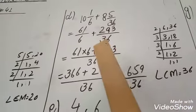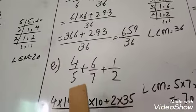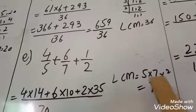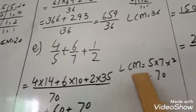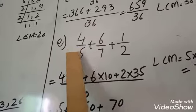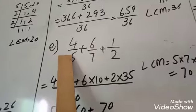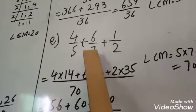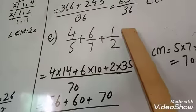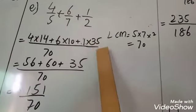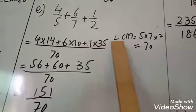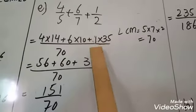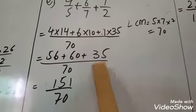Next question: we first change into improper fraction, then take LCM and solve. Here are three fractions. These three denominator values are prime numbers, so we simply multiply them: 5 times 7 is 35, 35 times 2 is 70. So we write 70 in the denominator. First value denominator is 5, so 5 times 14 is 70 — multiply numerator by 14. Plus 6, multiply by 10 since 7 times 10 is 70. Plus 1, multiply by 35 since 2 times 35 is 70. So 4 times 14 is 56, plus 6 times 10 is 60, plus 1 times 35 is 35. Now we add these values to get the answer.